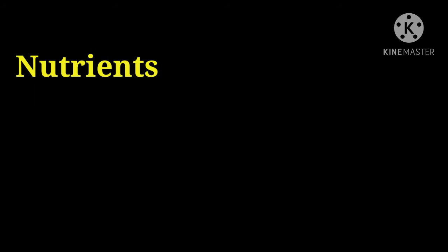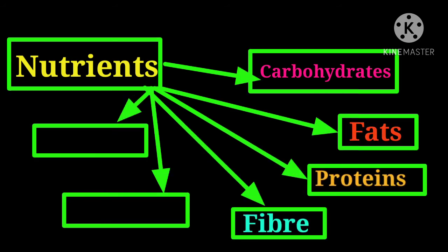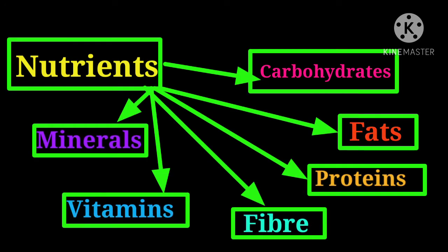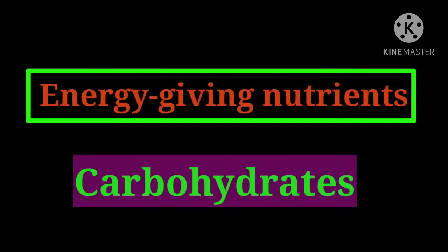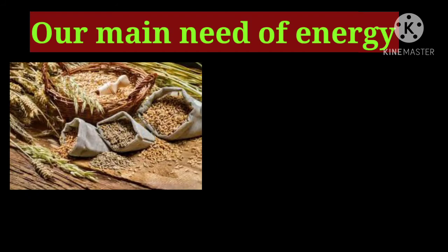There are six main nutrients in our food: carbohydrates, fats, proteins, fiber, vitamins, and minerals. These nutrients are present in different food items in differing proportions. Energy-giving nutrients — carbohydrates: our main need is of energy, and it is fulfilled by carbohydrates.